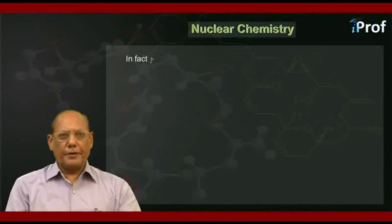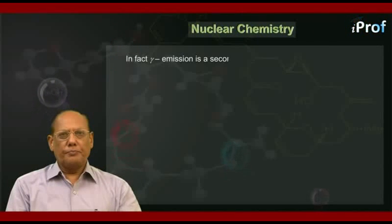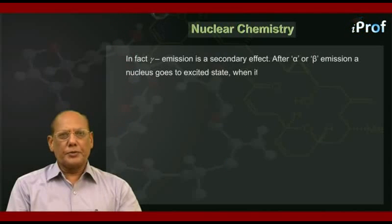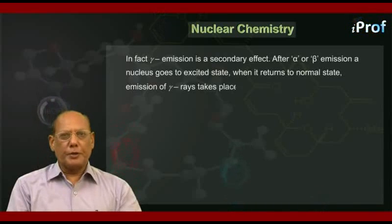In fact, gamma emission is a secondary effect. After alpha or beta emission, a nucleus goes to an excited state. When it returns to the normal state, emission of gamma rays takes place.